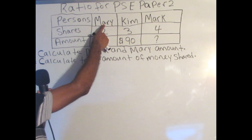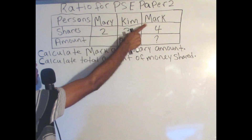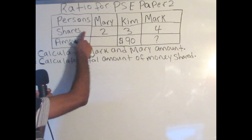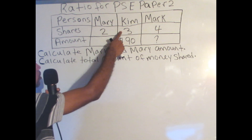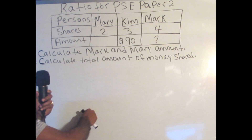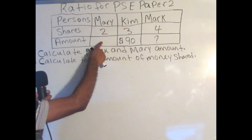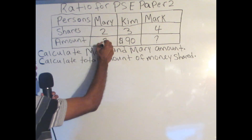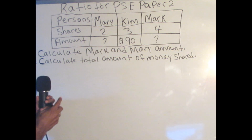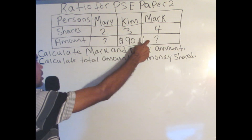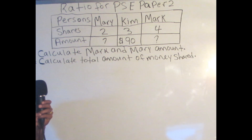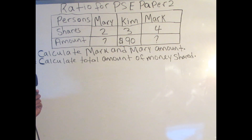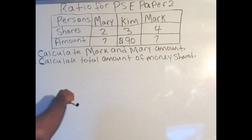So we have three persons: Mary, Kim, and Mark. Mary is a ratio of 2, Kim is a ratio of 3, and Mark is a ratio of 4. For the amount, we don't know how much Mary receives, so we'll put a question mark there. We know that Kim received $90, and Mark is also a question mark because we don't know how much Mark received. In order to find how much Mark and Mary receive, we have to work with what we know.